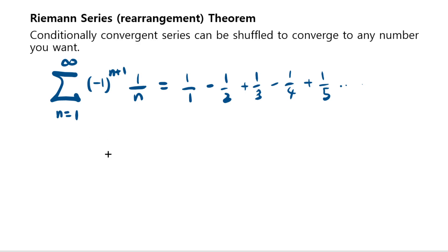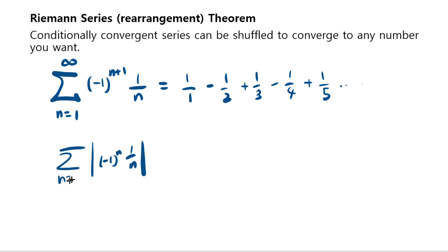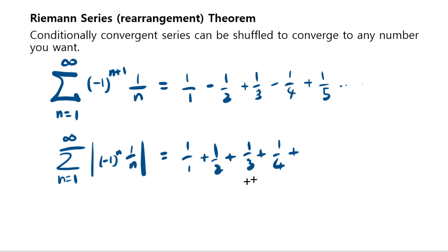This series actually converges. However, if you take the absolute value of this, which will be just 1 over 1 plus 1 half plus 1 over 3 — the denominators form an arithmetic sequence — that's called the harmonic series. And the harmonic series always diverges, so even 1 over 1, 1 over 3, 1 over 5, that still diverges.